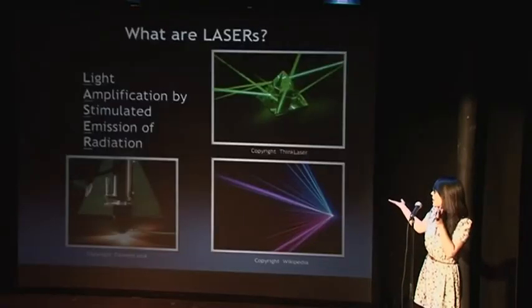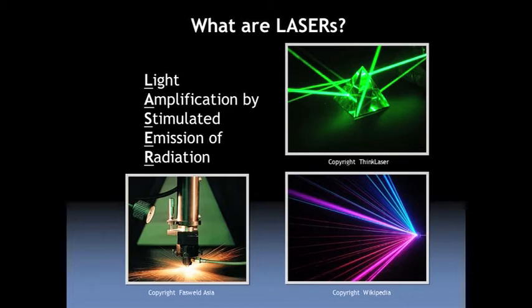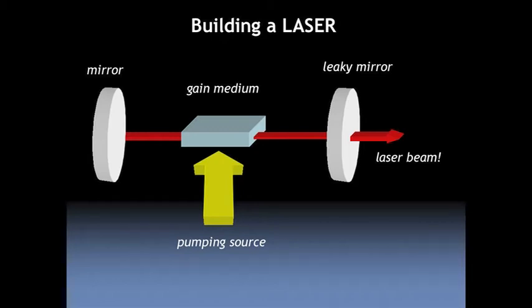In case you didn't know, LASER is an acronym for Light Amplification by Stimulated Emission of Radiation. Despite being portrayed as wild science fiction objects, they're actually relatively easy to make. You just need a pumping source which acts like an oven to excite a gain medium, which is usually a crystal. This gain medium spits out light which gets bounced back and forth between a pair of mirrors, and with each bounce it gets more and more intense.